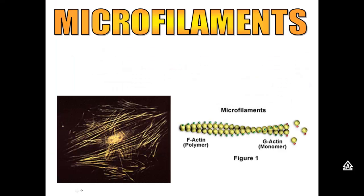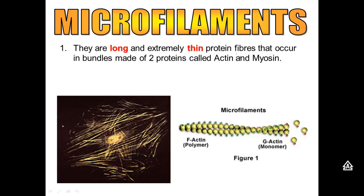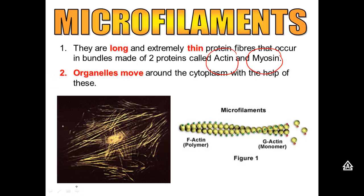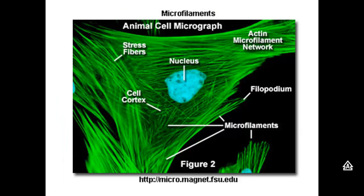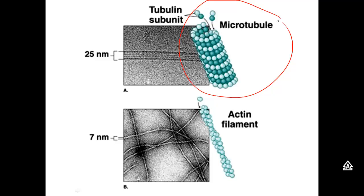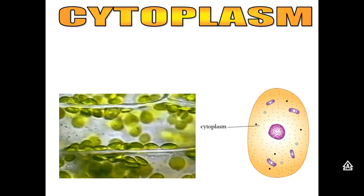The second type of cytoskeleton component is the microfilament. Microfilaments are smaller — very long and thin — and they're made of two proteins called actin and myosin. What they do is help move the organelles around the cytoplasm. When you think about those vesicles moving from the ER to the Golgi body to the plasma membrane, it's the microfilaments that help move them. So microtubules make cilia, centrioles, and flagella, while actin filaments support the cytoskeleton and move organelles around.